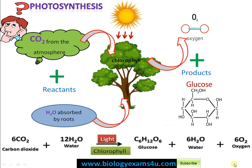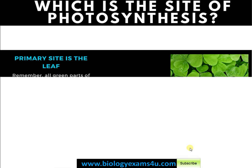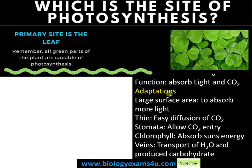The primary site of photosynthesis is undoubtedly the leaf. However, in the case of xerophytes that may not have leaves, the stem is green, and all green parts of the plant are capable of photosynthesis. The leaf is an organ specifically designed for photosynthesis.